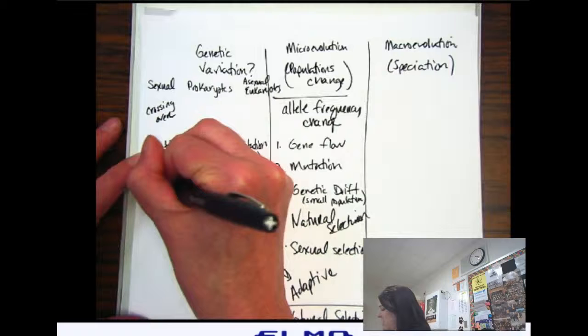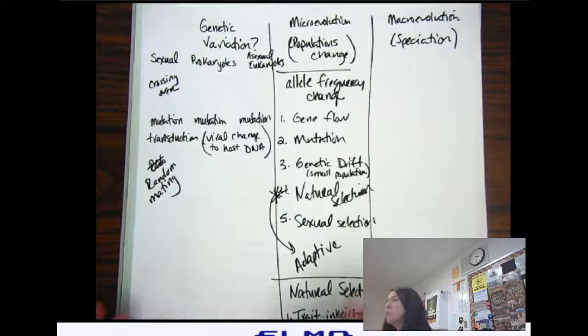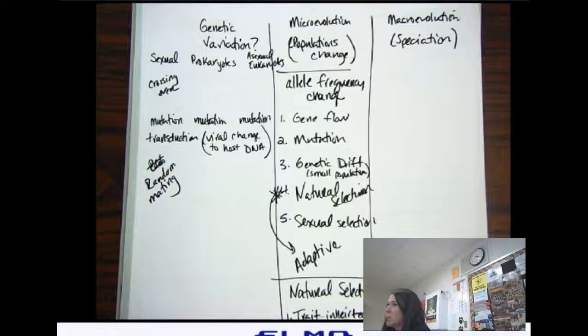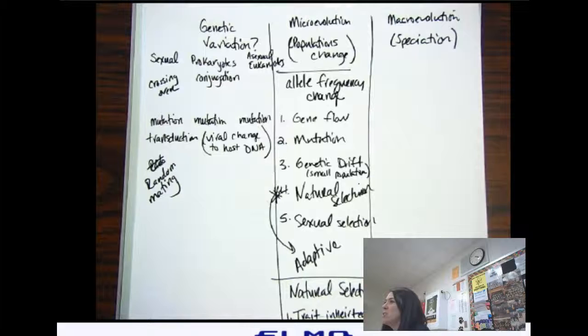Random mating on the sexual side. For which ones? Asexual I agree with, but not the eukaryotes. Bacteria. Conjugation. Do you guys remember what conjugation is?